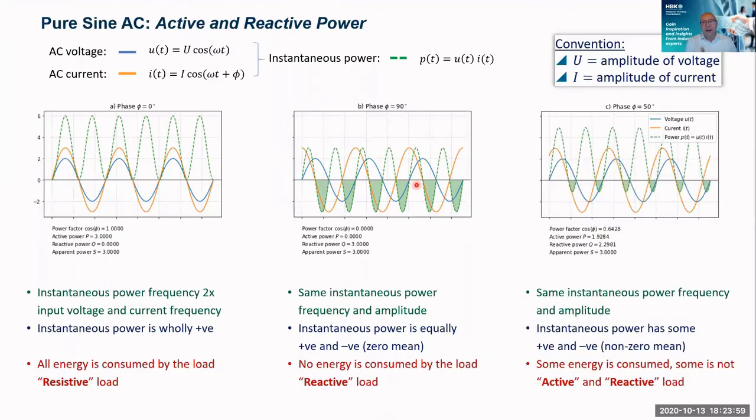Of course, real life, we don't get pure zero or 90 degrees. We've got some intermediate angle. And so what we find is we've still got the same amplitude and frequency here. But now we've got some that's positive and some that's negative. And so we've got some active and reactive load in there.